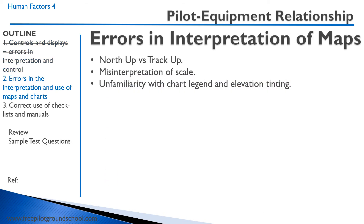A couple of errors in the interpretation of maps: north up versus track up. You should be flying with your track up so that things on the left and right are as they are outside. You can also misinterpret the scale — if you're flying faster or slower than what you're used to, you might think you're farther along than you actually are. Also, you could have unfamiliarity with the chart legend and elevation tinting.